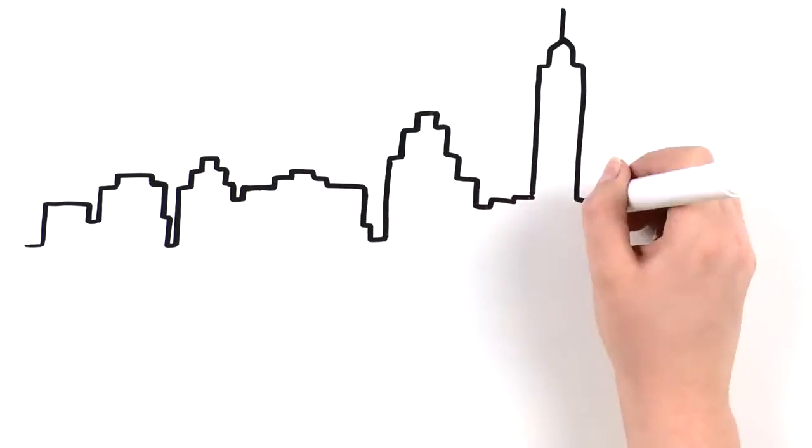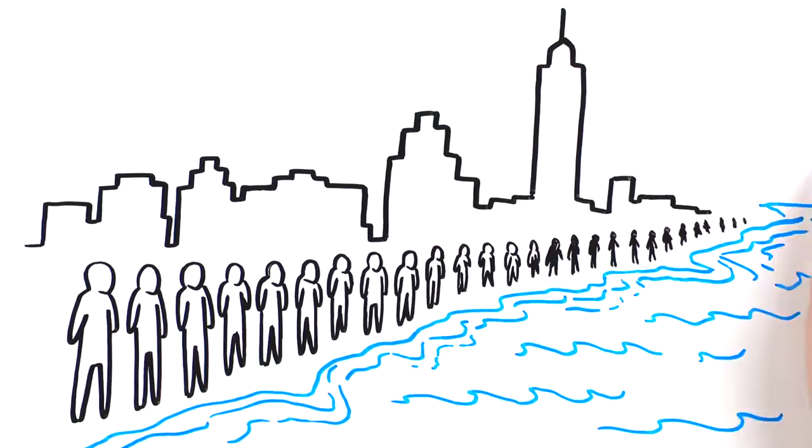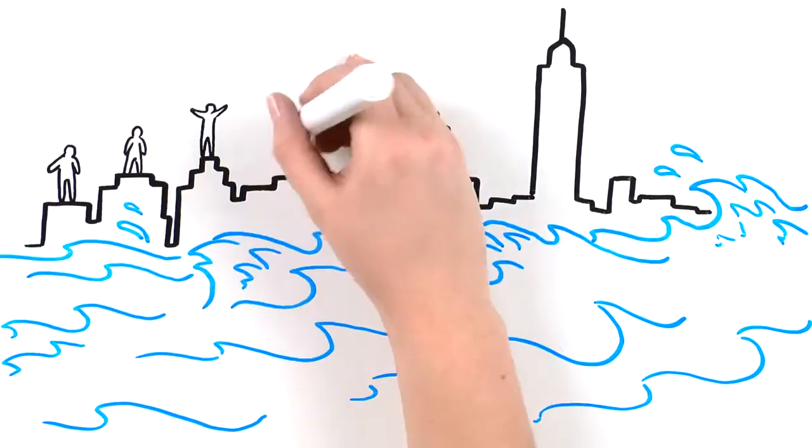In the United States alone, nearly 5 million people live within 4 feet of the local high tide level. That could mean increased flooding from storm surges.